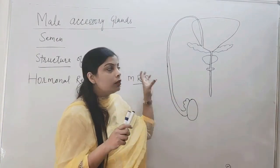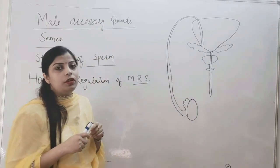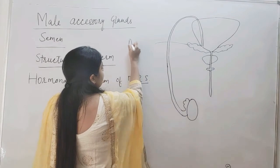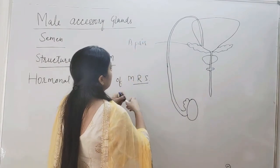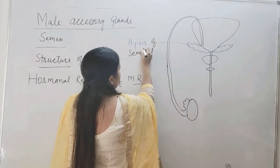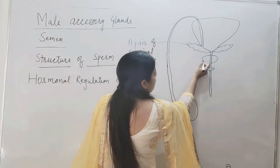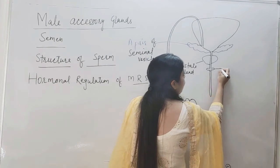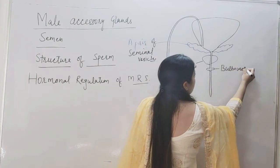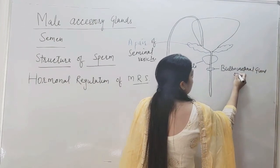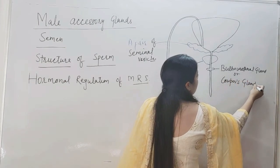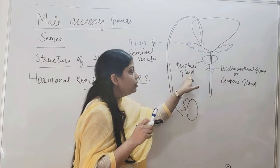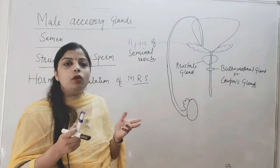We already know the position of these male accessory glands. There are a pair of seminal vesicles, then there is a large single prostate gland, and after that there is a pair of bulbo-urethral glands, also known as Cowper's glands. These three structures constitute the male accessory glands.